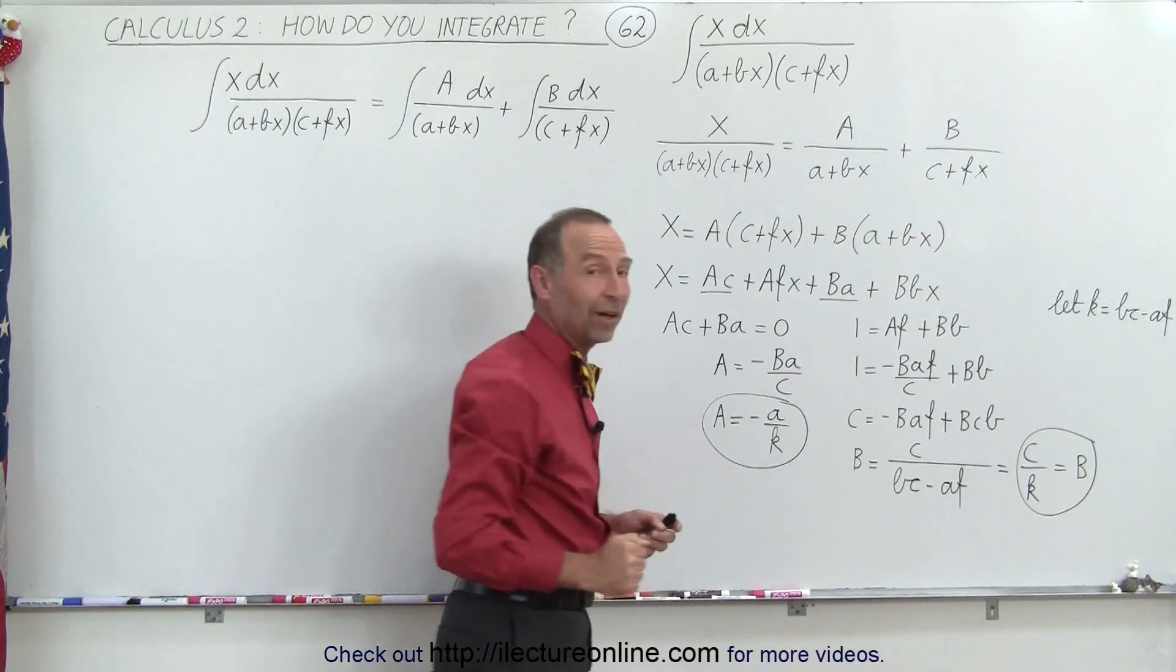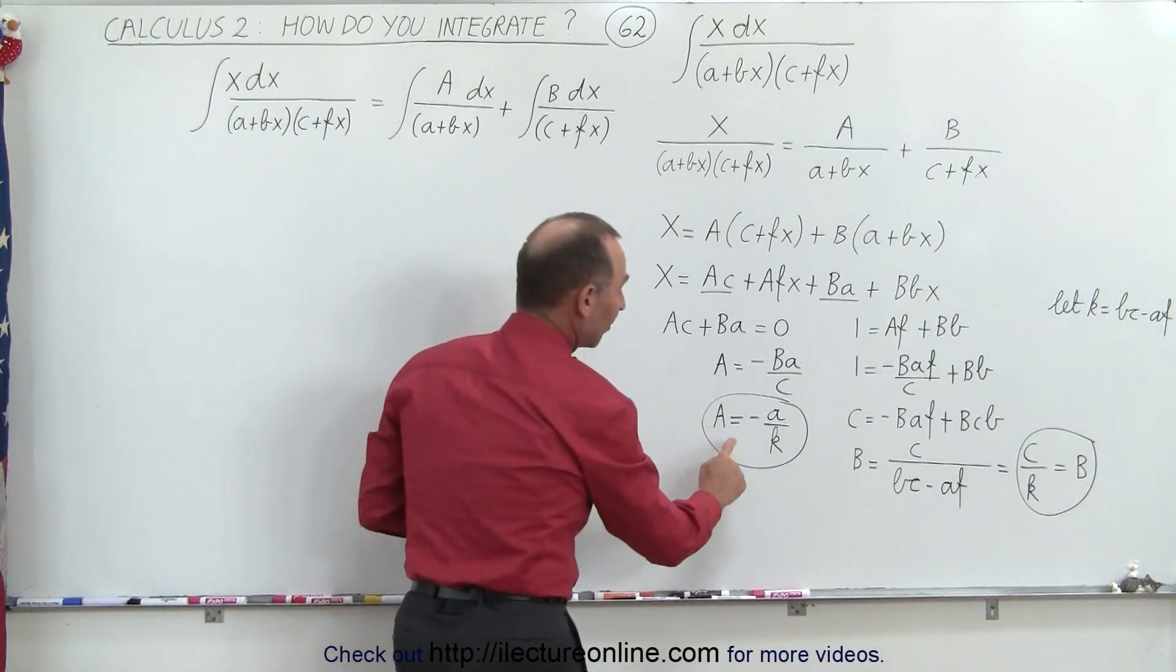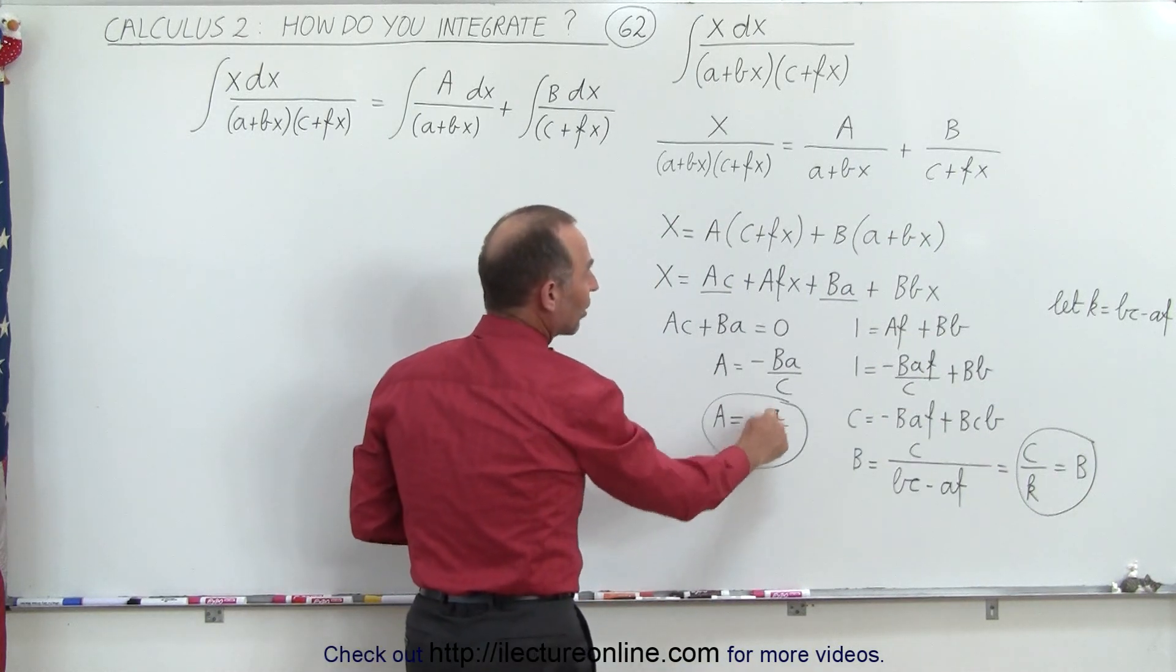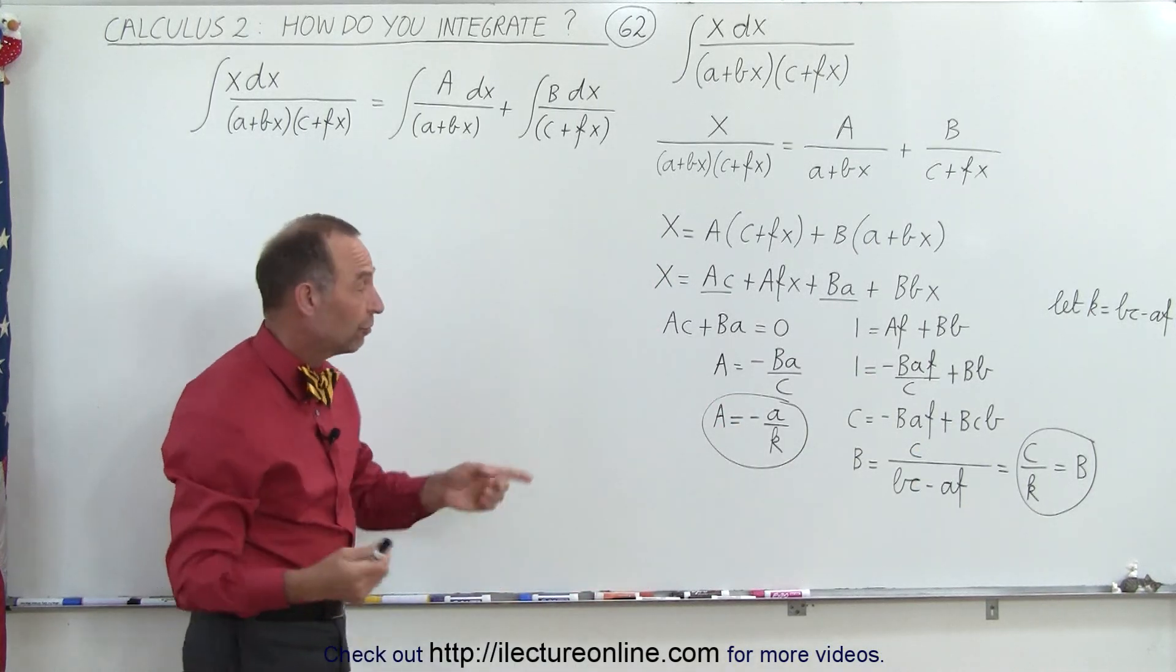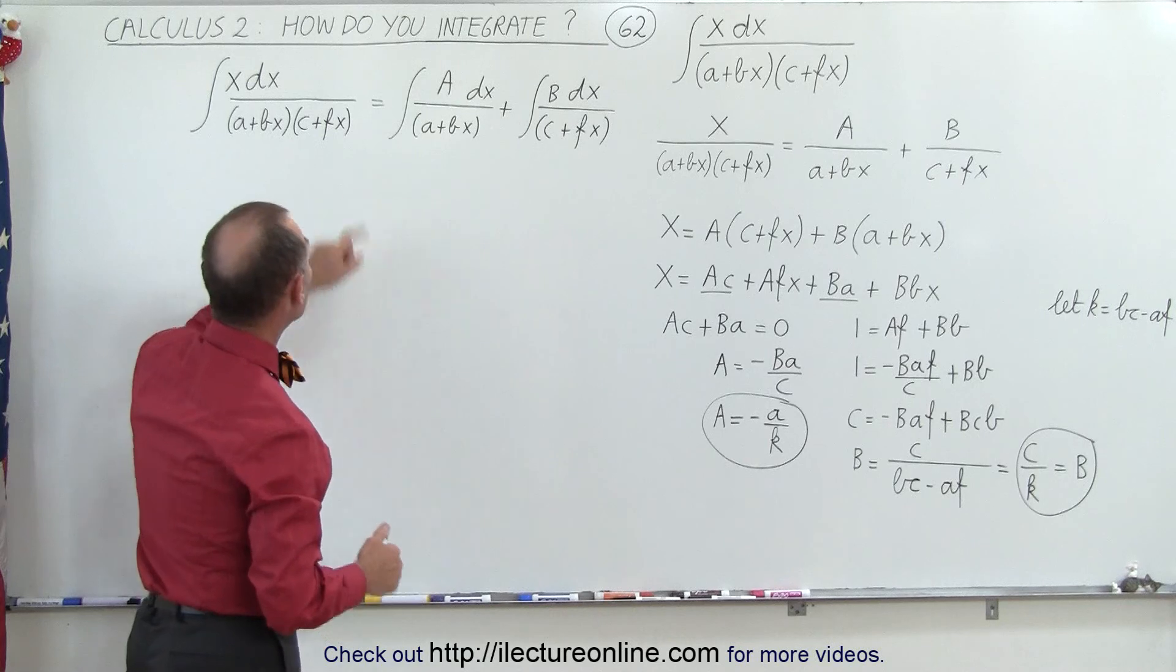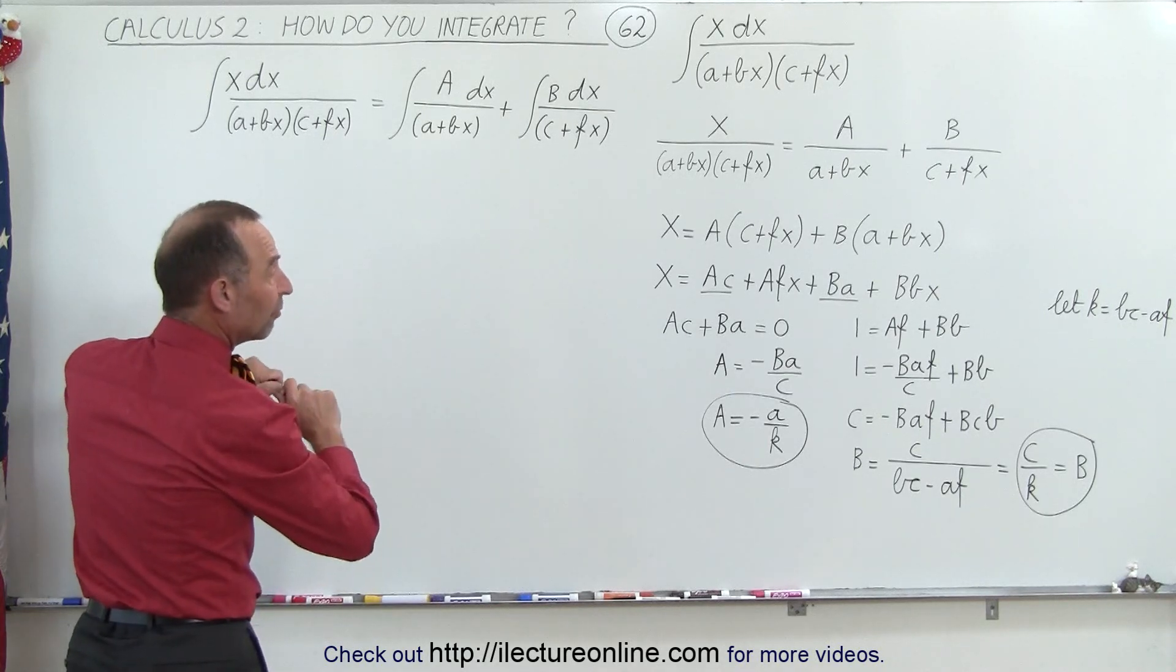And then we can see that A is equal to minus a over k when we plug the B in for the big B there. So now we have the two values for A and B, which means that our integrals now become the following.